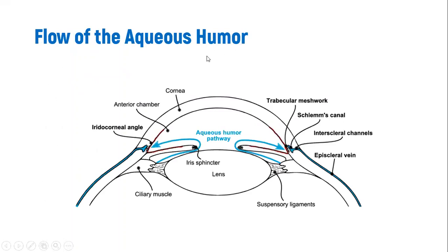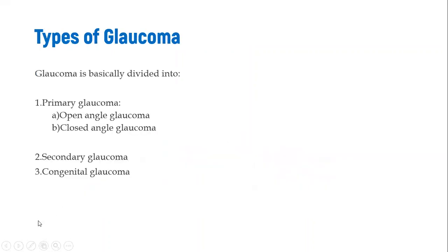It is important to understand the flow of aqueous humor. Aqueous humor is produced from the ciliary body and flows from the posterior chamber to the anterior chamber of the eye. It is then drained via the trabecular meshwork, which is found at the iridocorneal angle. This is the normal flow of aqueous humor.